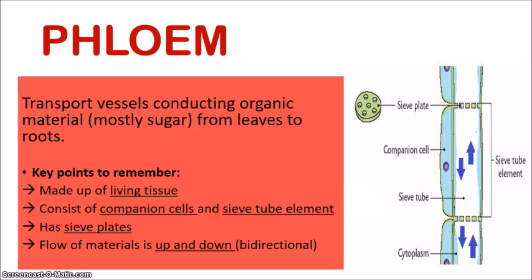The key points to remember about the phloem: it is made up of living tissue, unlike the xylem which has dead tissue. This living tissue consists of companion cells and sieve tube elements. The companion cells contain the nucleus and control all the activities of both the companion cell and the sieve tube element, which is responsible for transporting the sugars. There are perforations where the end walls are broken down to form sieve plates. The flow of materials moves in both directions — upwards and downwards — so it is bidirectional movement.